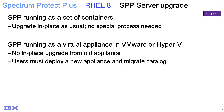So what you're going to have to do is deploy a new Spectrum Protect Plus appliance — either vSnap or SPP server — and then either move the disks to that new appliance if it's a vSnap, or migrate the catalog to that new appliance if it's the Spectrum Protect Plus server.